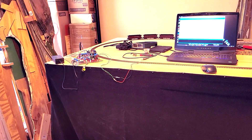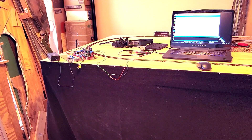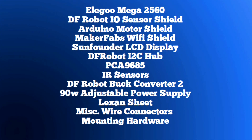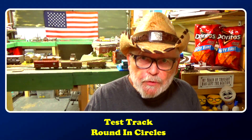We'll be updating with more features as I do more experimenting with EX-Rail. To refresh you on the components used: the Elegoo Mega 2560, DF Robot I/O sensor shield, Arduino motor shield, MakerFabs Wi-Fi shield, SunFounder LCD display, DF Robot I2C hub, PCA9685, several IR sensors, DF Robot buck converters, two 90-watt adjustable power supplies, a sheet of lexan, miscellaneous wire, connectors, and mounting hardware.